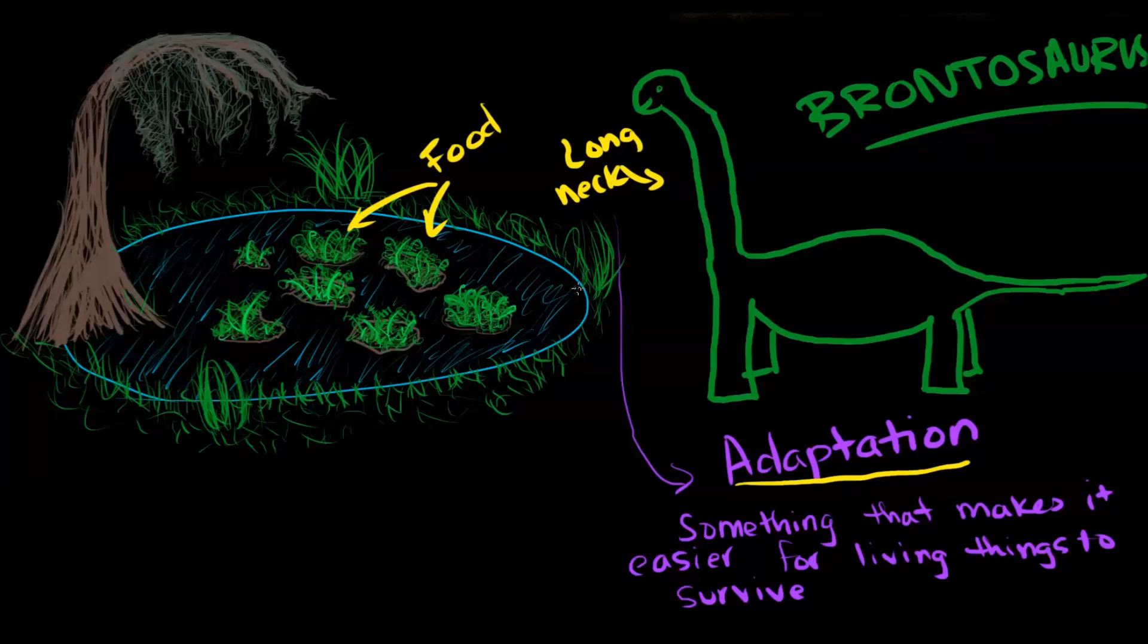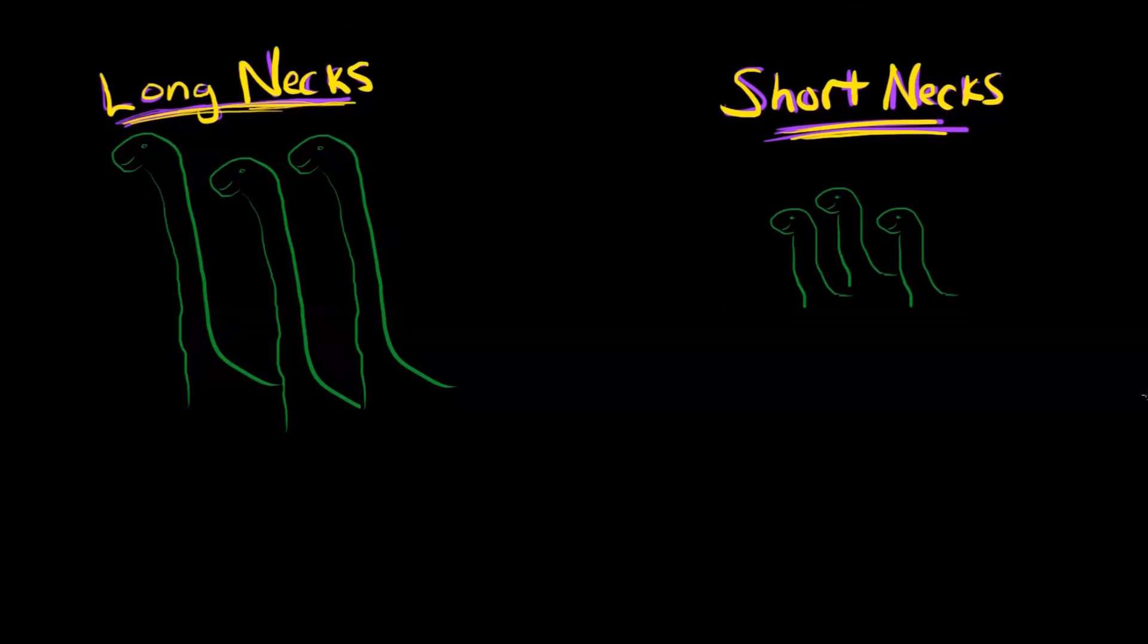So I want you to think now, if we're trying to figure out how adaptations come about, I want you to think about a group of dinosaurs even longer before Brontosaurus. And some of them had long necks and others had short necks. So this is a group of dinosaurs. Some have short necks, some have long necks, just like you and your friends. Some of you are tall. Some of you are short. So now the question is, who's going to have an easier time surviving? The long neck dinosaurs that can reach into that swamp and eat that food? Or the short neck dinosaurs that might get stuck and attacked by predators if they try to do that? Well, if you said the long necks are going to survive, you're right.